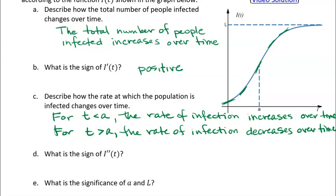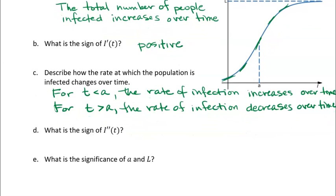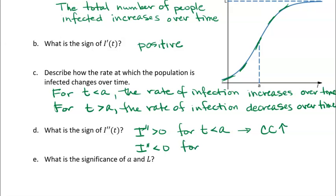What is the sign of the second derivative of I of T? It changes at A. I double prime is greater than zero for T less than A, because the increases are increasing — that's what gives it that concave up shape. The second derivative is less than zero for T greater than A, because it's concave down — it looks like the left-hand side of an upside-down U.